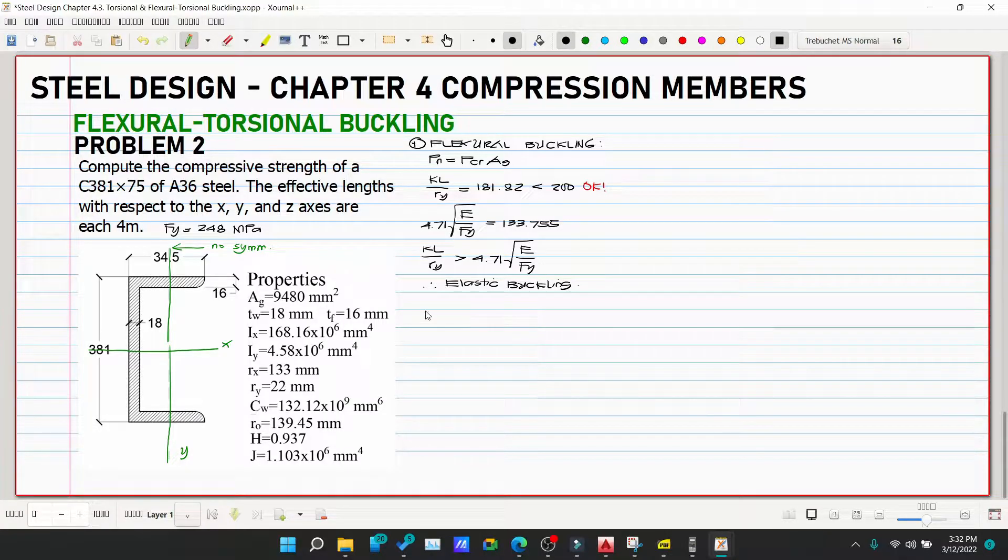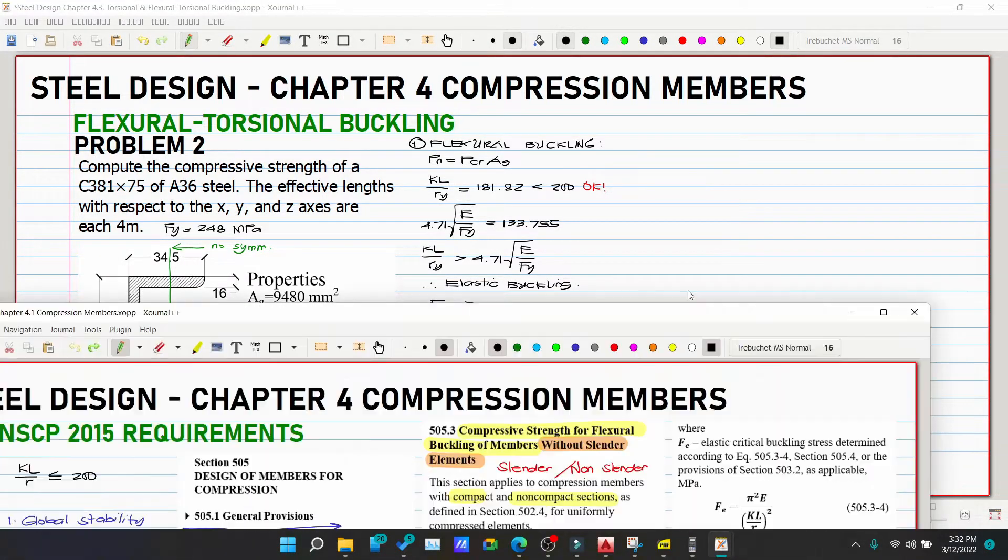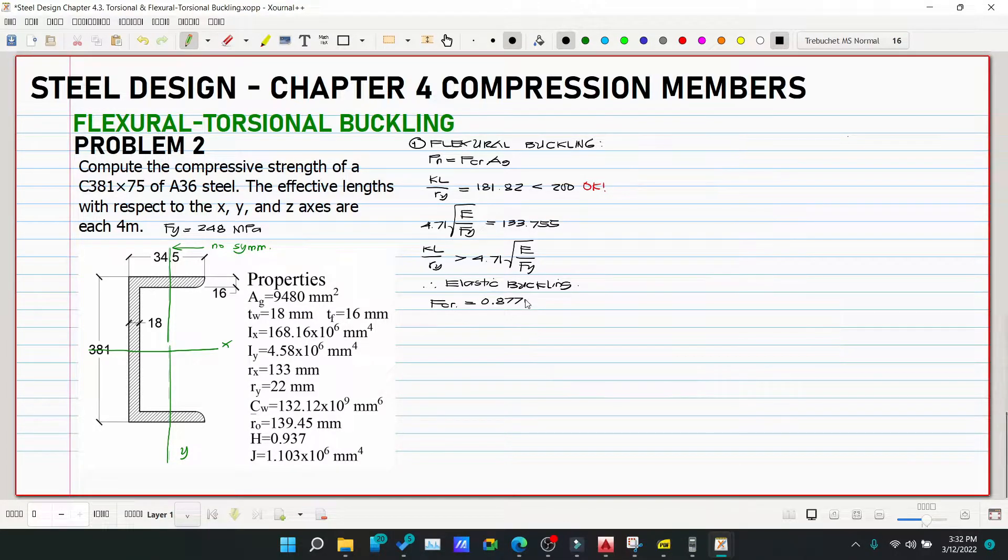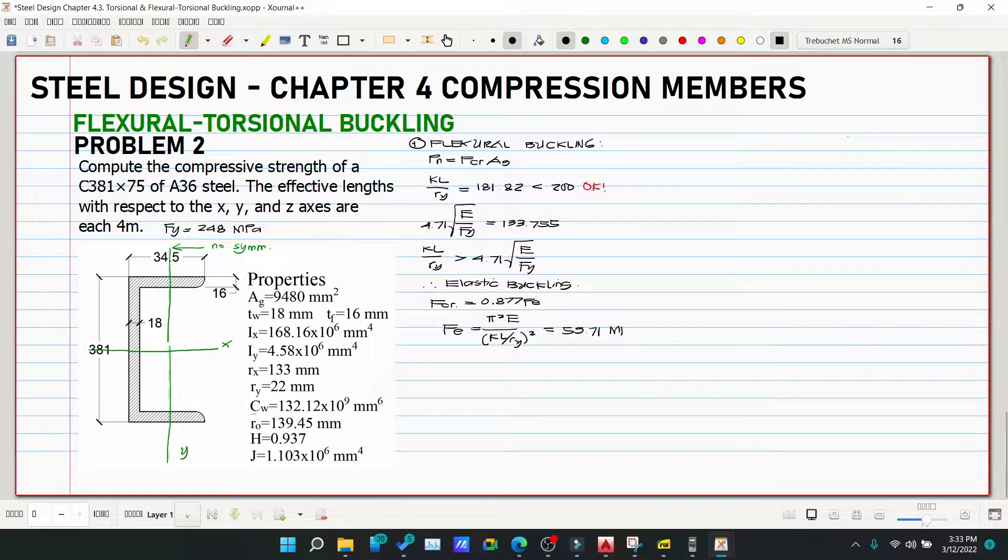If elastic buckling, our Fcr from the introduction is 0.877Fe. So Fe = π²E/(KL/ry)². So π²E/181.82² = 59.71 megapascals.